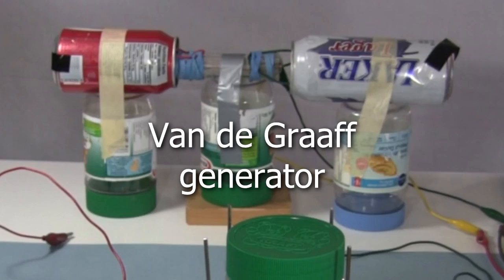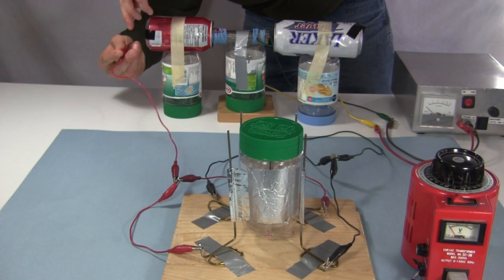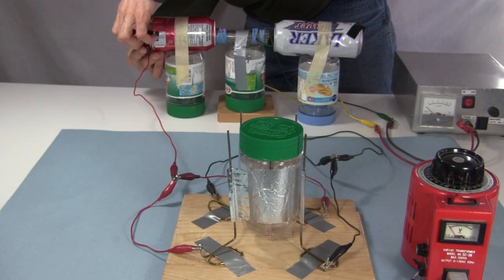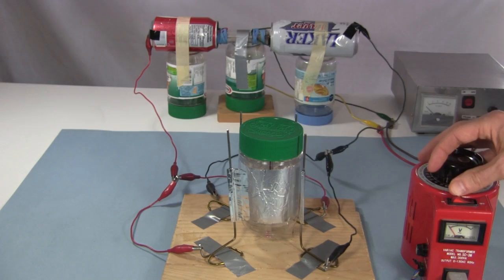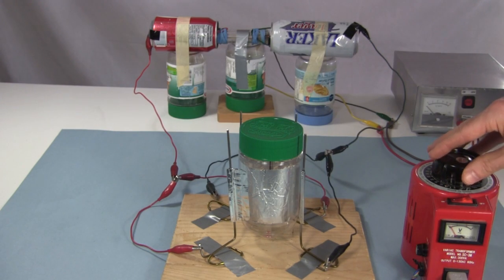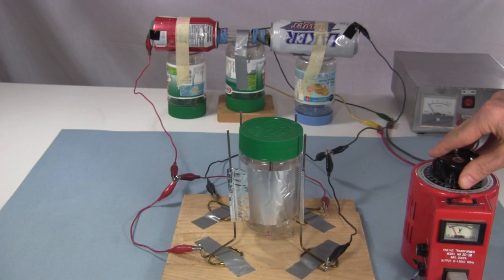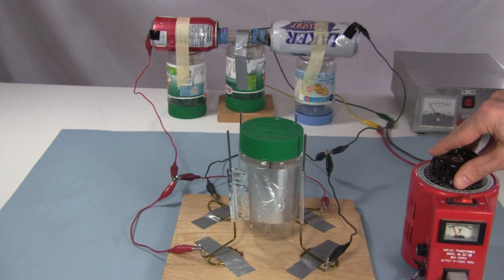And this is my homemade Van de Graaff generator. I connect the high voltage side to the can that's the high voltage side of the Van de Graaff generator, and I connect the ground side to the grounded can. I turn it on and turn up the speed, and it starts to turn. With less available charge this time, it doesn't turn as fast.